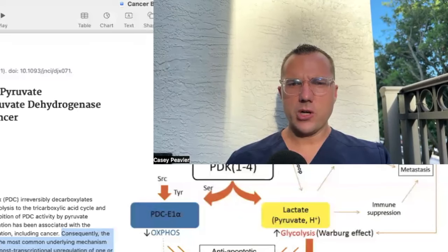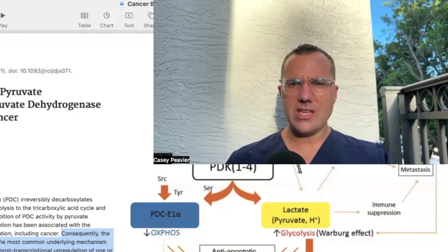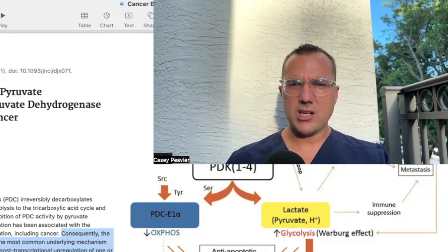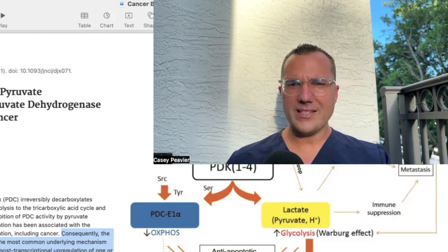Welcome back, Mitochondriacs, for another episode of Cancer is a Mitochondrial Metabolic Disease. Now that we have laid a bunch of groundwork to understand what the metabolic therapeutic targets are while using metabolic therapy for the management of cancer, we can go into detail about specific targets and using specific agents to hit those targets. Today, we're going to be discussing a few inhibitors of an important enzyme called pyruvate dehydrogenase kinase, PDK.